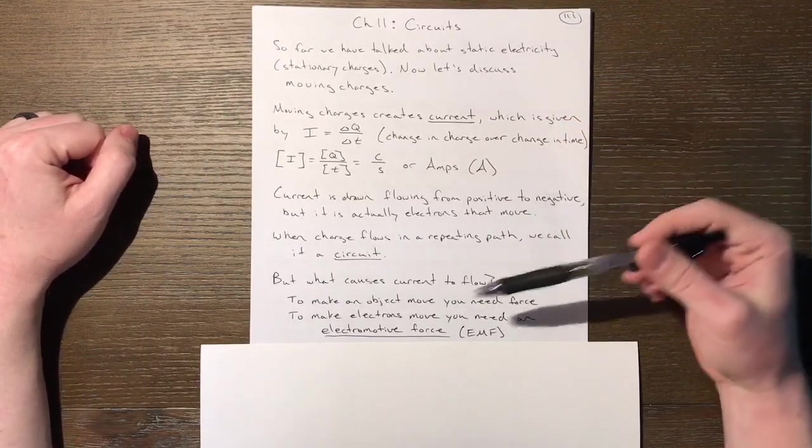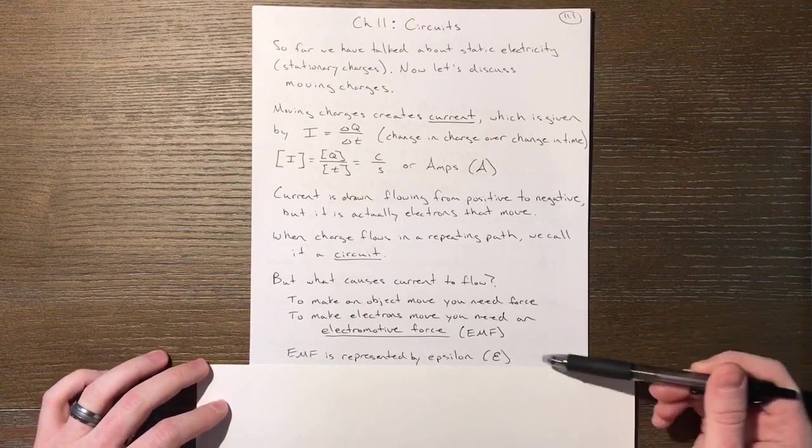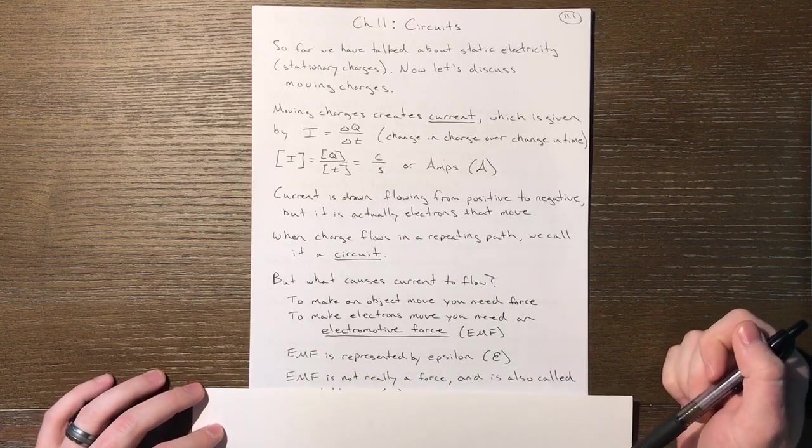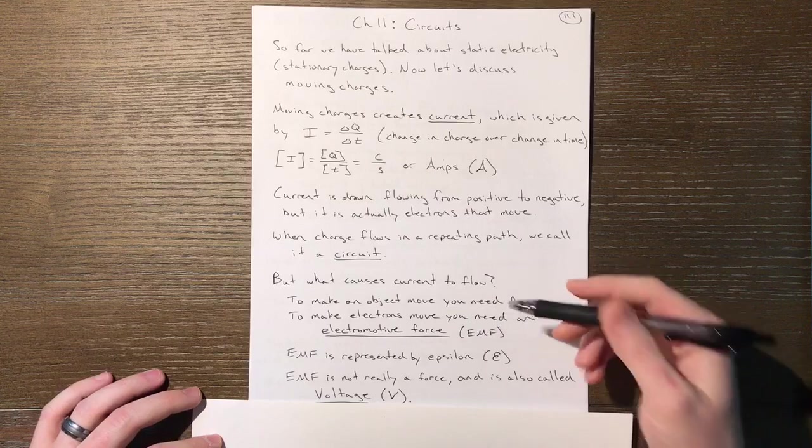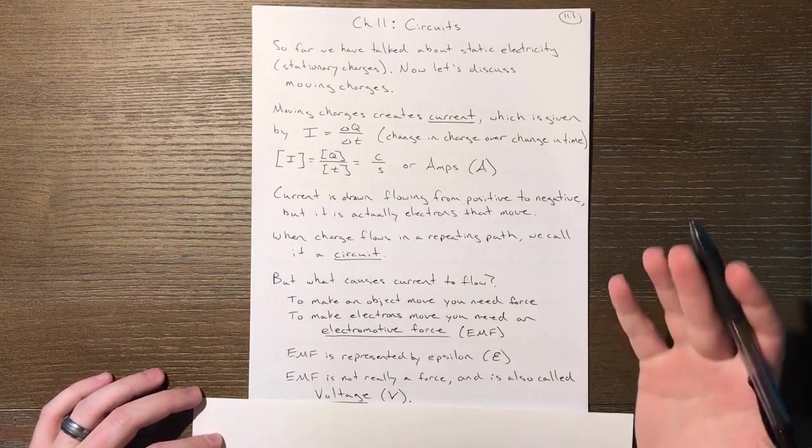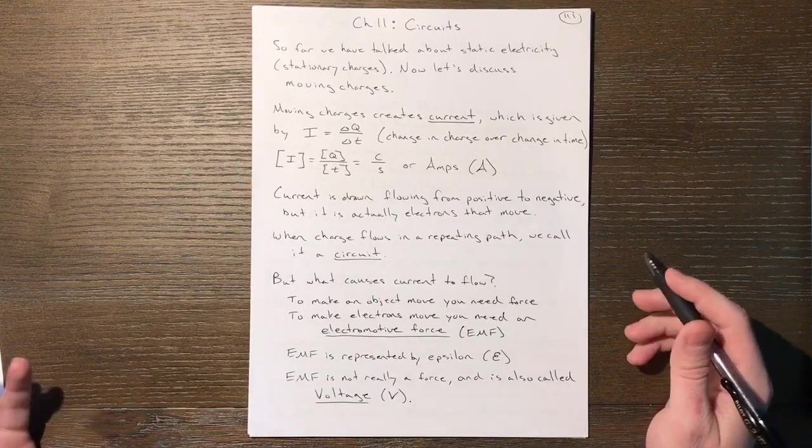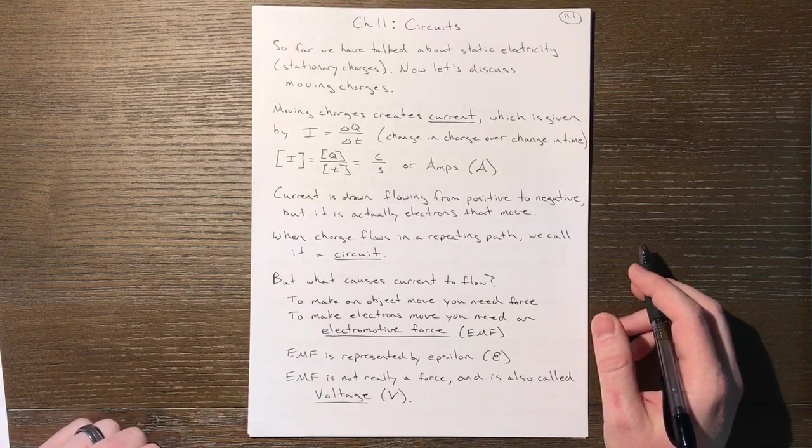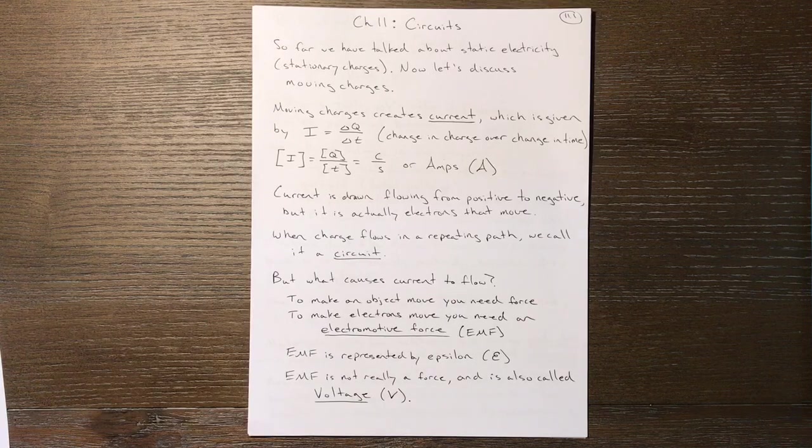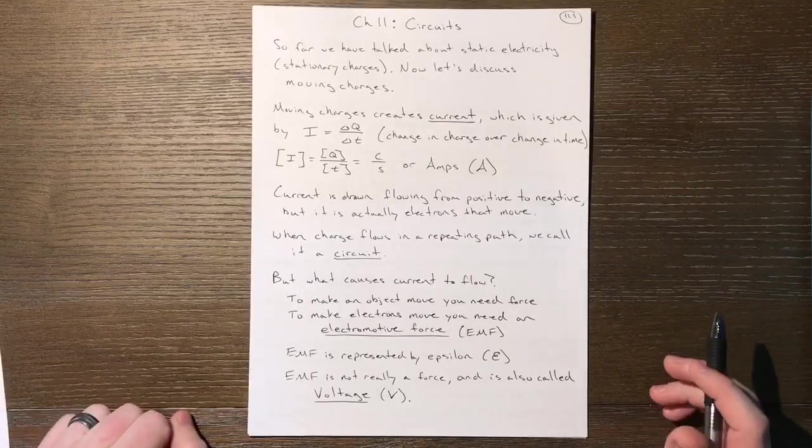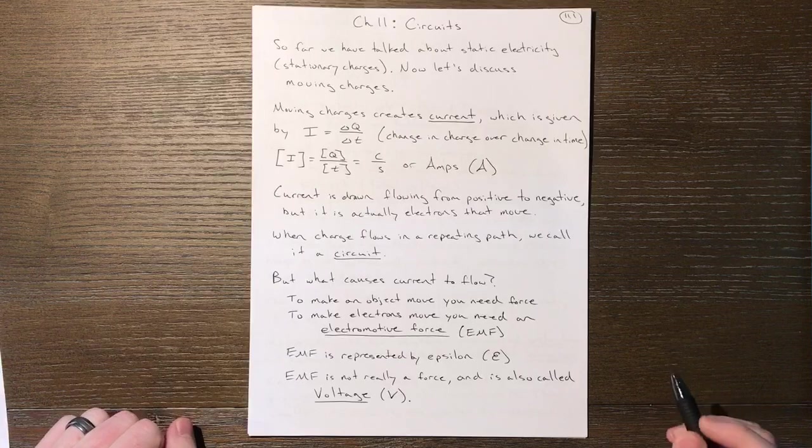EMF is usually given by the Greek letter epsilon. EMF is kind of a misnomer—the force has an analogous term to EMF, but it's not really a force. The electromotive force is really a voltage or potential difference. EMF or voltage is what pushes charge along, given by capital V. Together those define two of our big three: current, voltage, and resistance.